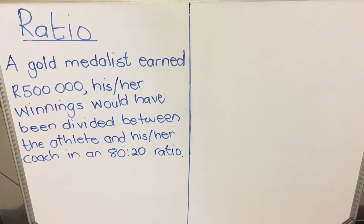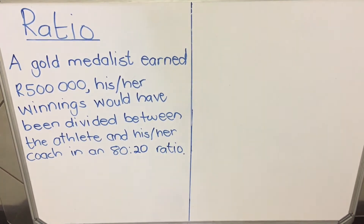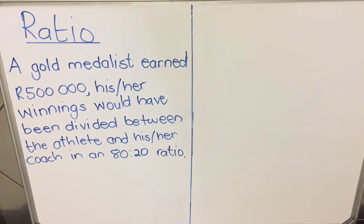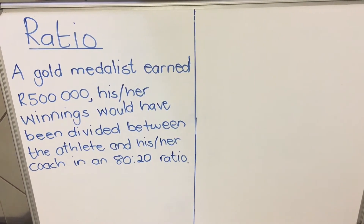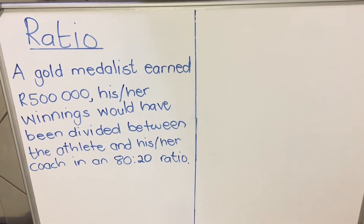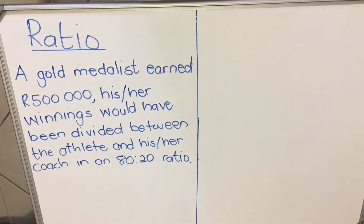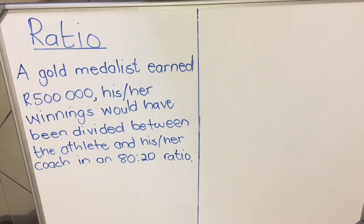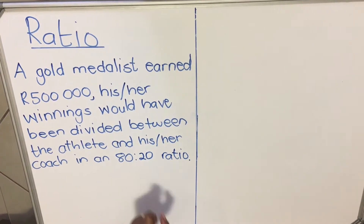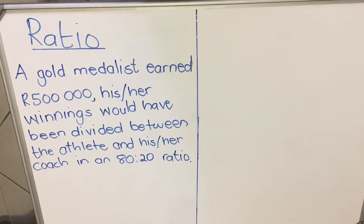Hello everyone, this is a lesson on ratio. I'm going to use an example to explain how we use ratio. Here is an example of a gold medalist: when they went to the Olympics, they earned 500,000 if they get a gold medal. The athlete and the coach share the winnings in the ratio 80 to 20. Ratio can be written in this way and it can also be written as a fraction.